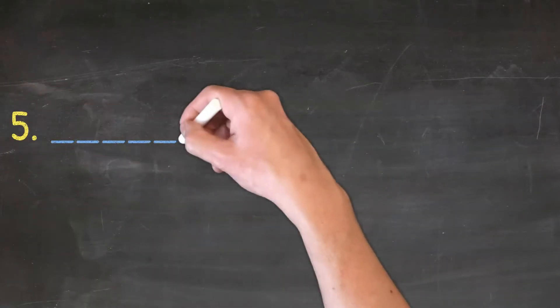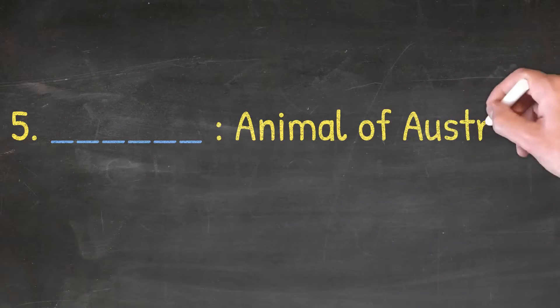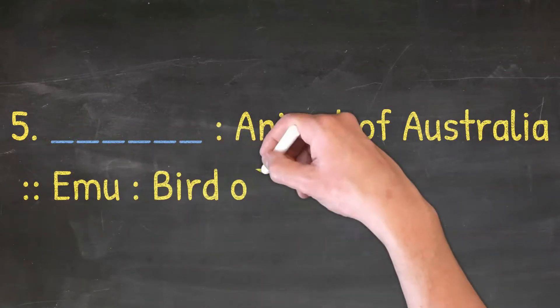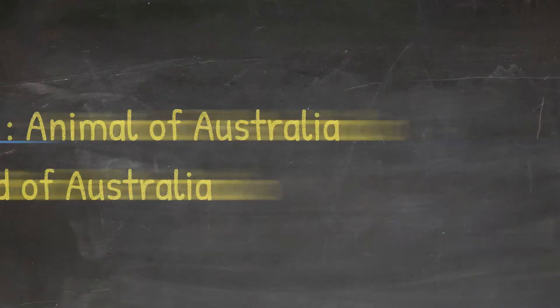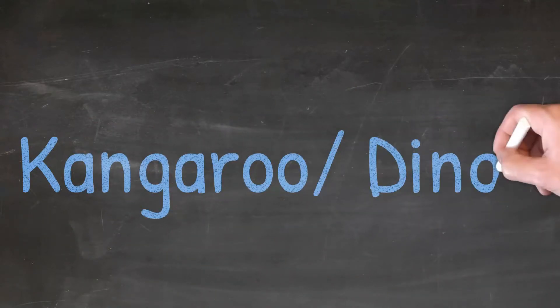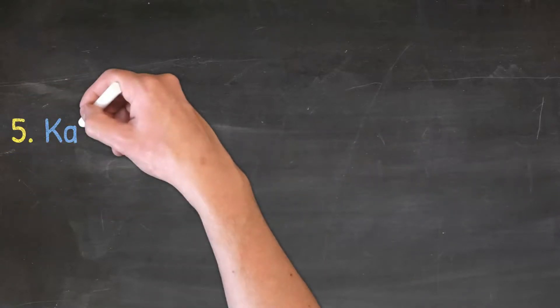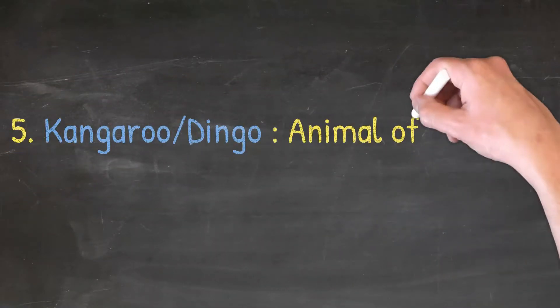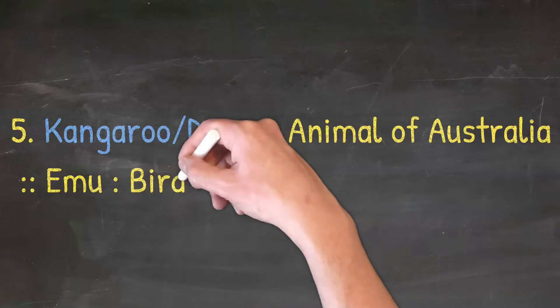Dash, Animal of Australia. Emu bird of Australia. The answer can be kangaroo or dingo. So kangaroo or dingo animal of Australia, emu bird of Australia.